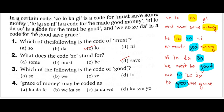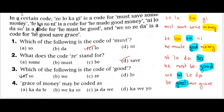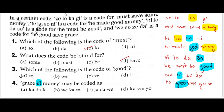Now the third question: 'grace of money may be coded as what?' 'off' doesn't appear anywhere in any given code. So 'zi lo ka gi', 'fe ka so ni', 'ni lo da so', 'be so zi da' — 'off' is not there, so 'yo' is a new code. The correct answer is D — 'ka we yo', where 'yo' is a new code for 'of'.